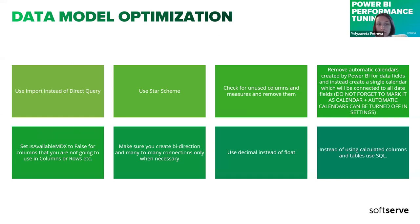There is also a property called isAvailableMDX, which I'll show you where to find. We normally set it to false for columns that we know won't be used in rows or columns displayed to users. When it's false, Power BI doesn't create internal hierarchies for those columns, and it doesn't take up extra space either.